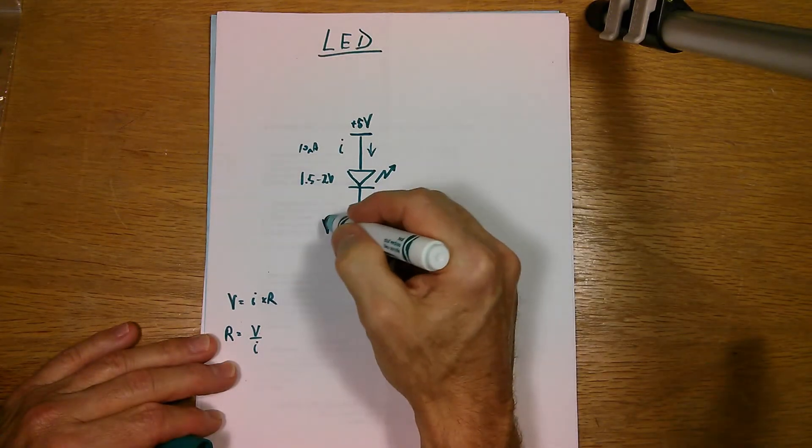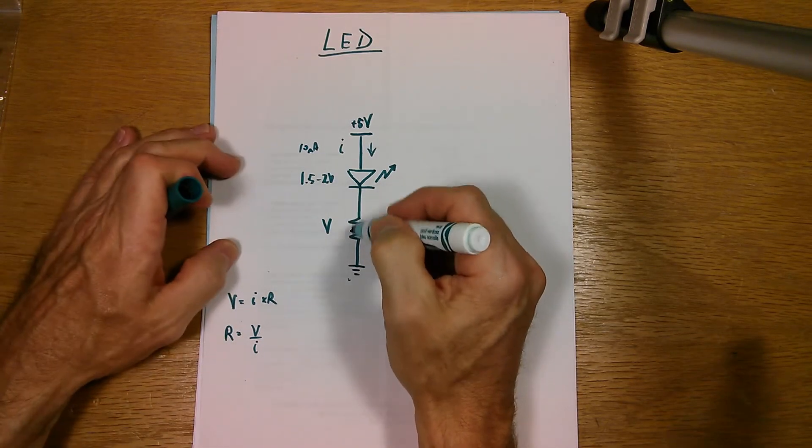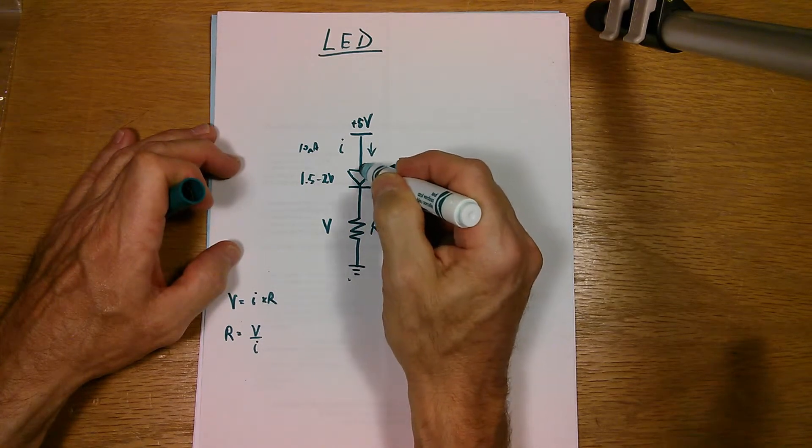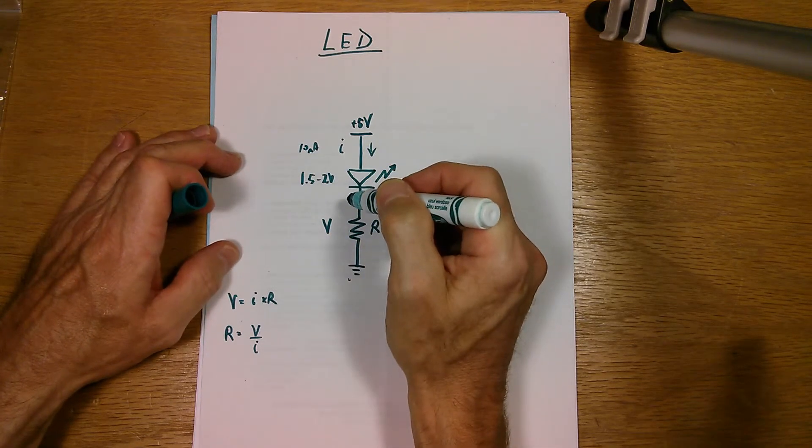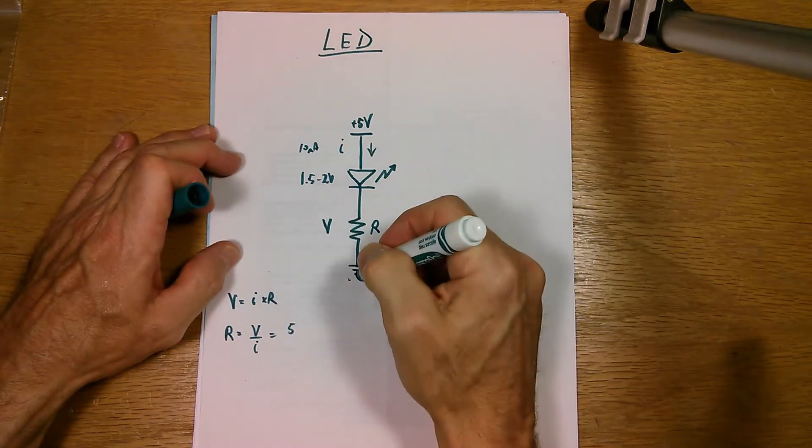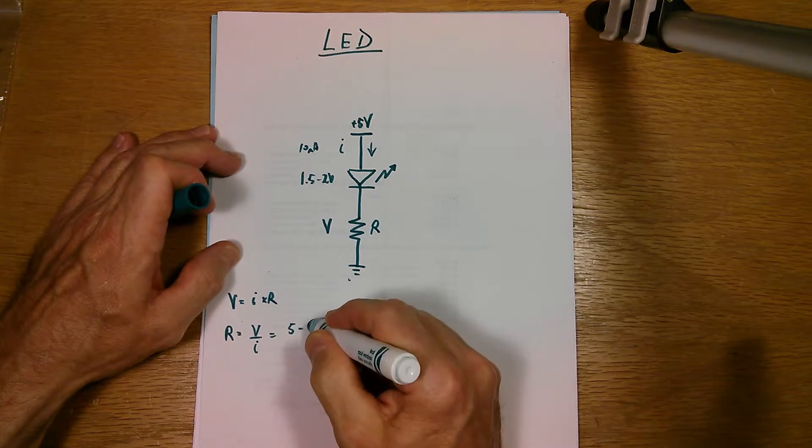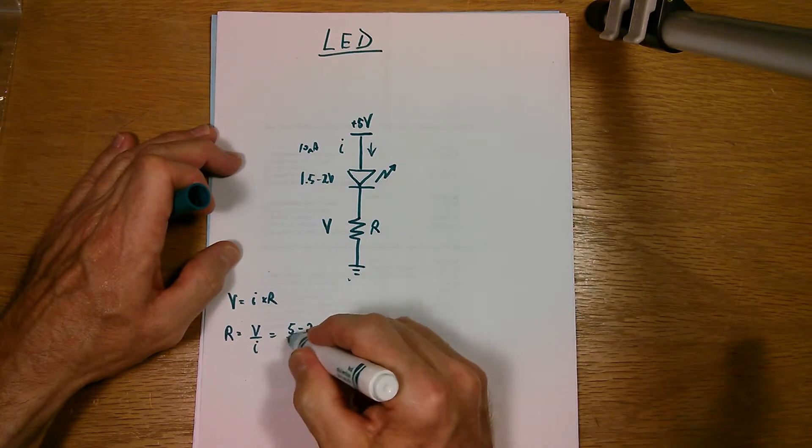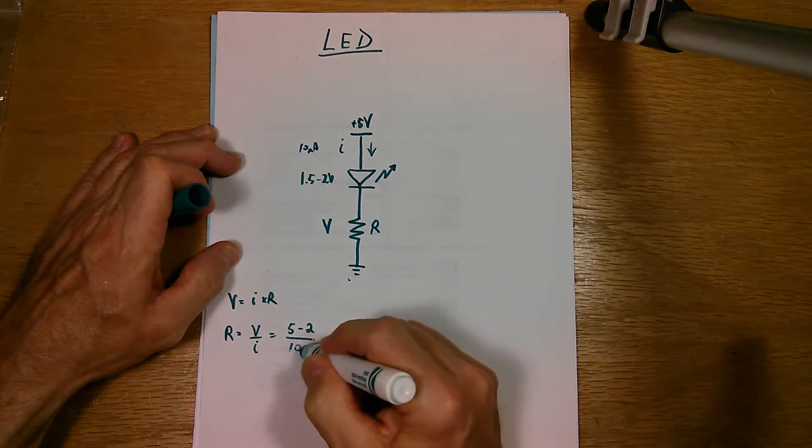And so what's V across the resistor? Well, it's the residual voltage from the five volts left over when you subtract the one and a half to two volts. So we'll go five volts from the whole thing minus, we'll use two volts here, divided by 10 milliamps.